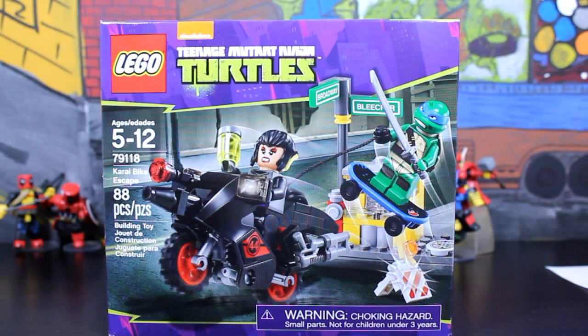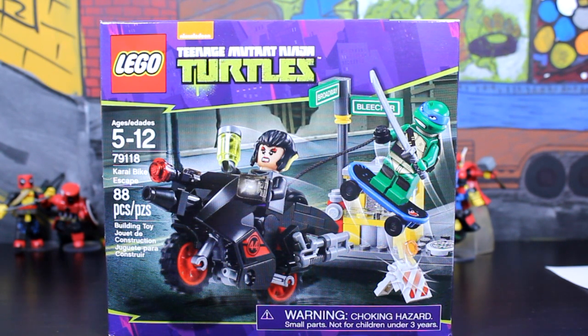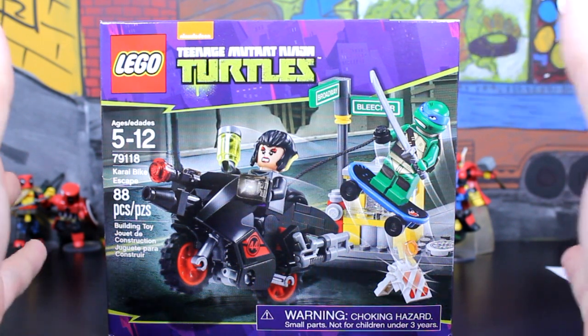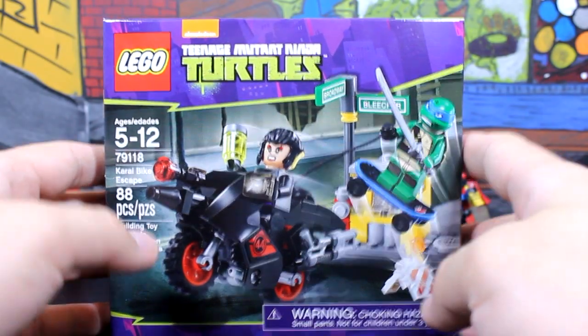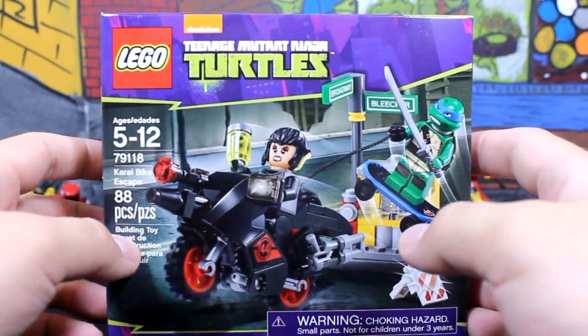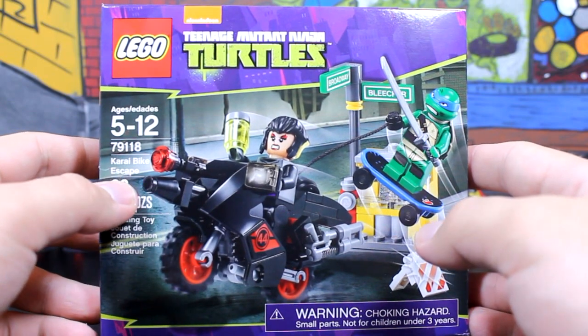Alrighty, what is going on everybody? My name is Blitzwinger and of course welcome back to another Let's Build episode. This is episode number two. The first episode was an absolute massive success. You guys were so tremendous with the likes and comments and sharing and favoriting and all your kind words on social media. Today we're going to be doing episode number two, which will feature of course set number 79118, a very small set, only 88 pieces, and it is titled Karai Bike Escape.